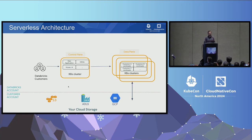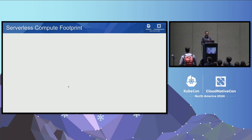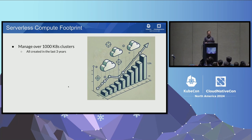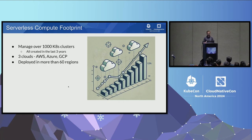All our clusters are at the core of all Databricks tasks. Over the recent past, we have seen tremendous growth in our serverless compute. We manage over 1,000 clusters today, and all the growth we have seen — all these clusters — were created in the last three years only. We are present in all three clouds: AWS, Azure, and GCP, and we are deployed in more than 60 regions as of today.